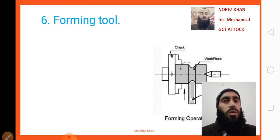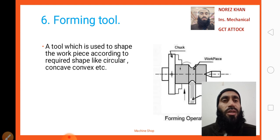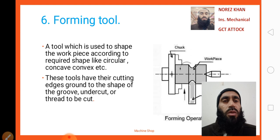The next tool is a forming tool. Here you can look at the diagram of a forming tool setup. A forming tool is used to shape the workpiece according to a required shape, like circular, concave, and convex, etc. These tools have their cutting edges ground to the shape of the groove, undercut, or thread to be cut.